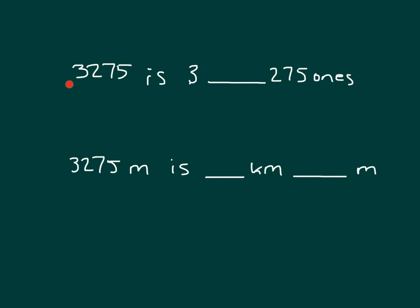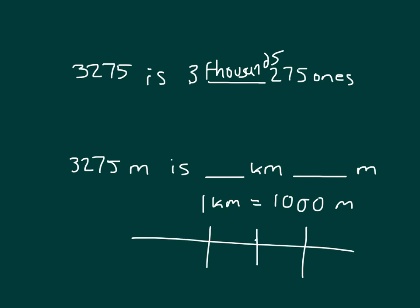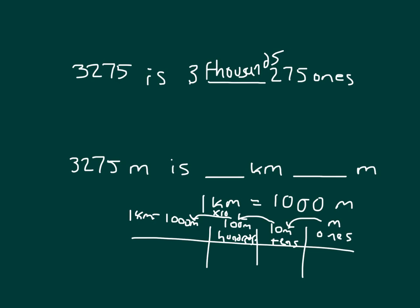Here is another problem: 3,275 is three something with 275 ones. The value of that three is three thousand, so that place value is the thousands place. We know that one kilometer equals 1,000 meters. So on a place value chart, ones are meters, tens are ten meters, hundreds are 100 meters, and thousands — multiplying by ten again — is 1,000 meters, which equals one kilometer.